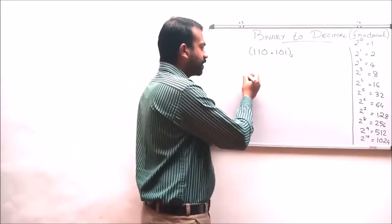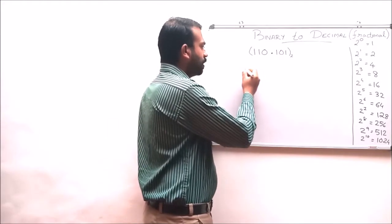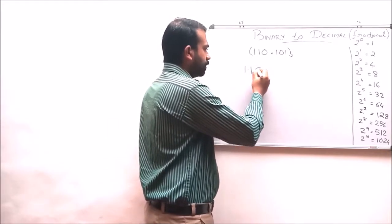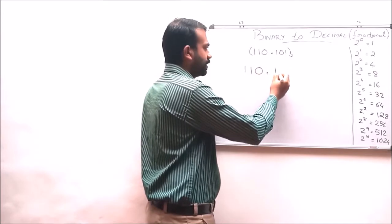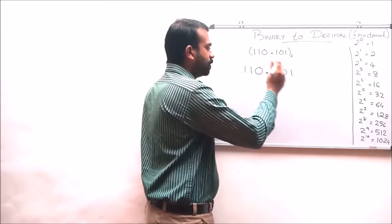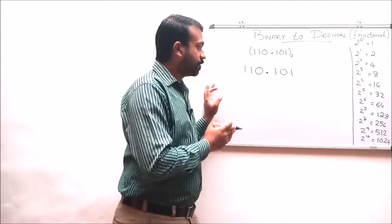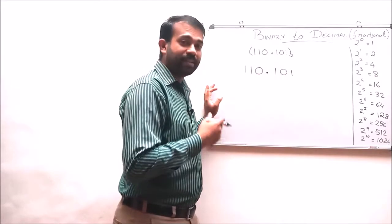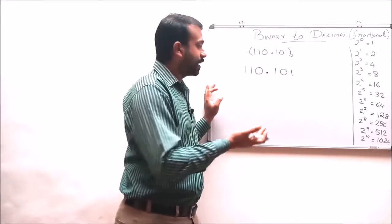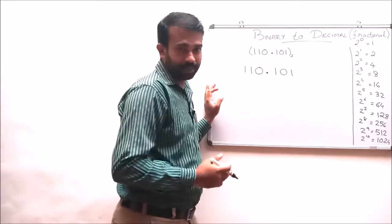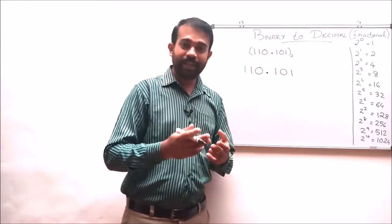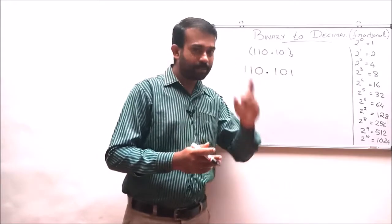When we are considering a fractional number, a fractional number always has a fractional point in between. The left part of the fraction is known as the whole number part, and the right part is known as the decimal fractional part. In a fractional number, the digit positions are counted based on this decimal fractional point.